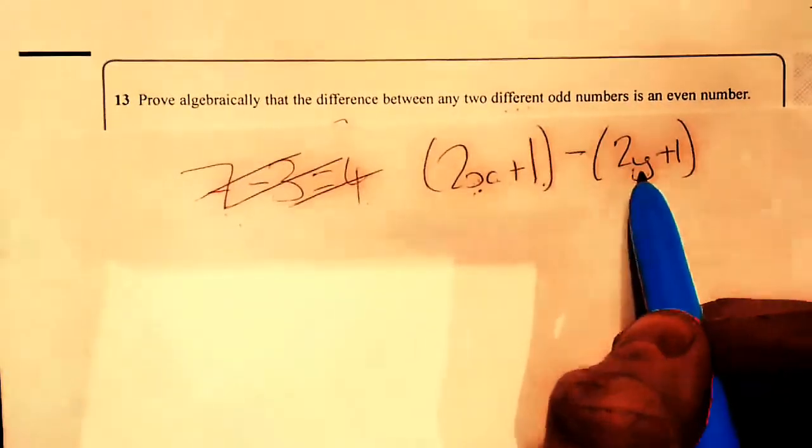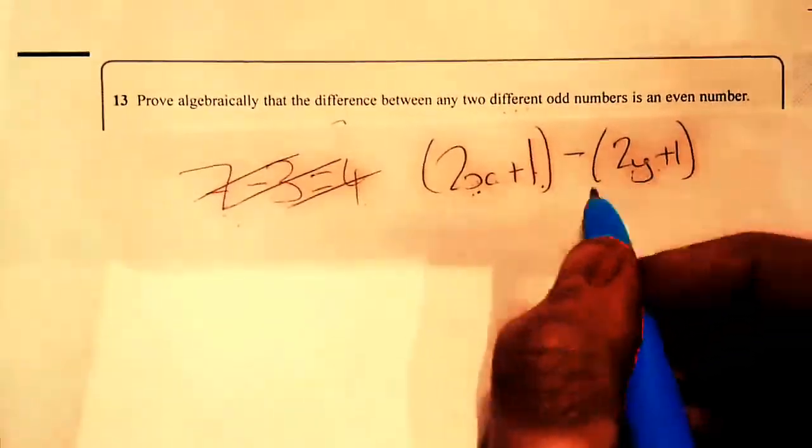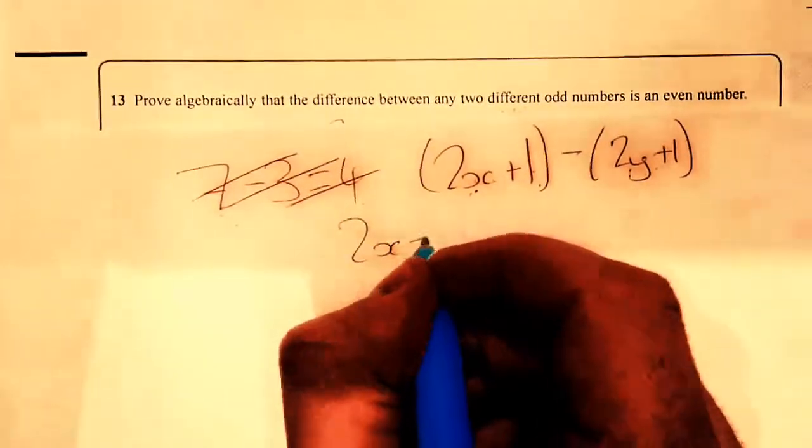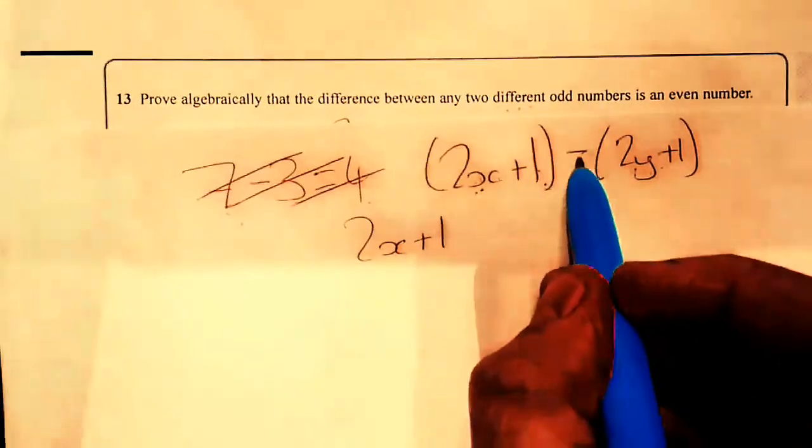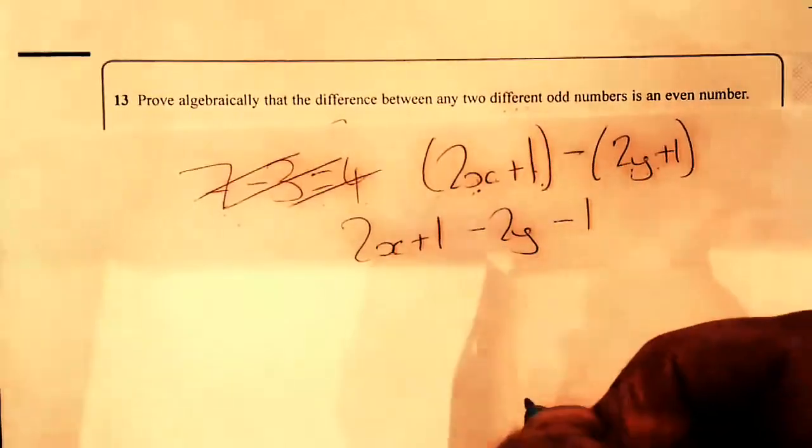If they're consecutive, I'll put plus 3. You can also put minus 1 if you wish. Now, I'll just put brackets there. For that one, it's minus, becomes minus 2y minus 1.